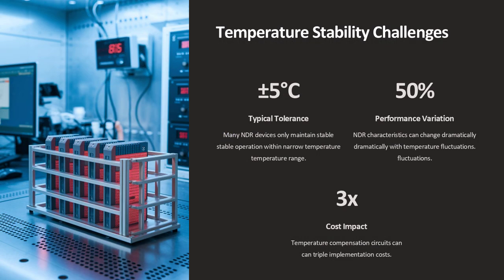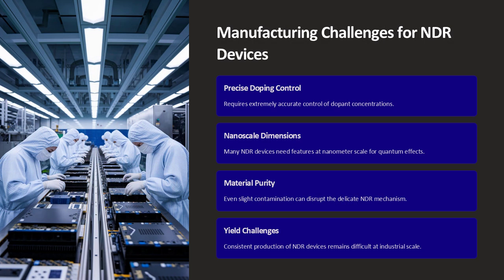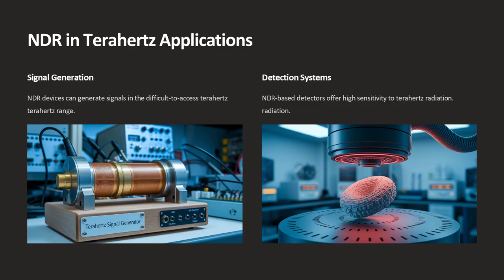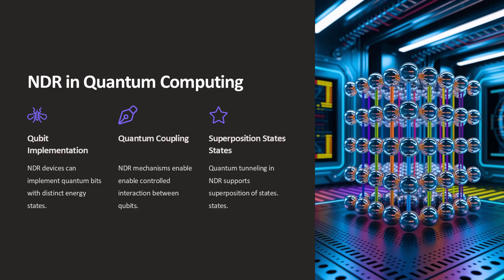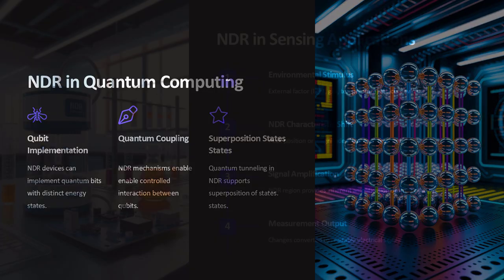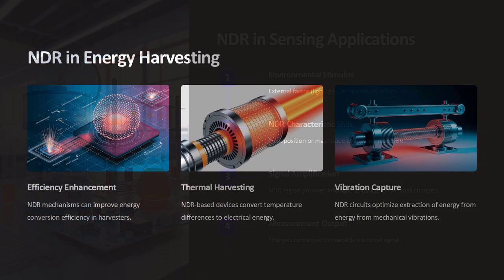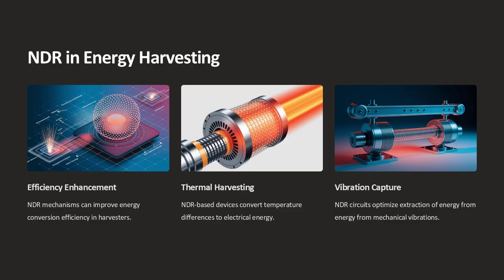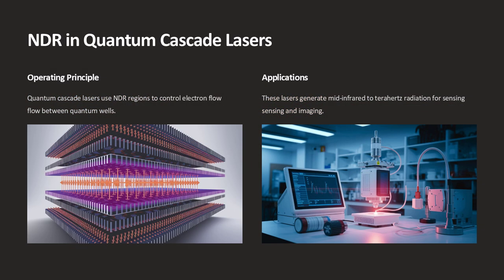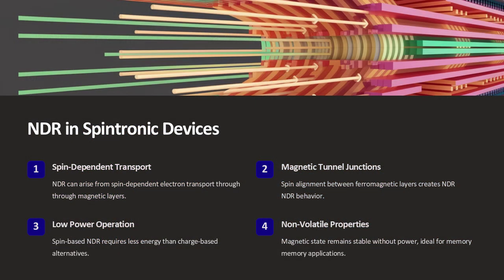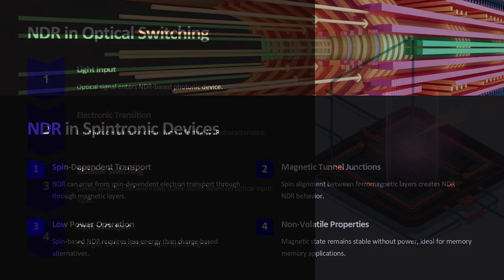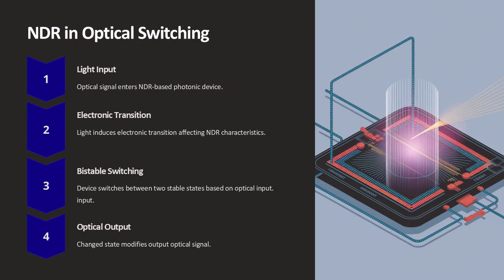One compelling example of the practical use of NDR is in the design of high-frequency oscillators. Oscillators are devices that generate repetitive signals and are crucial in applications like radio transmitters and signal processors. The unique IV characteristic of an NDR device can be harnessed to produce stable oscillations at frequencies that are difficult to achieve with conventional components. This is why researchers are continually exploring NDR in various materials and structures — it holds the promise of pushing the boundaries of current electronic technology.